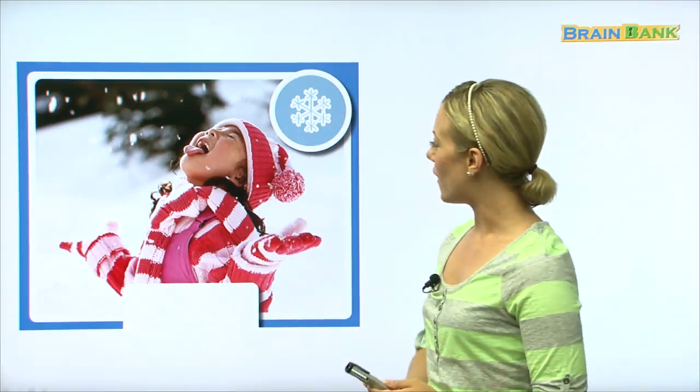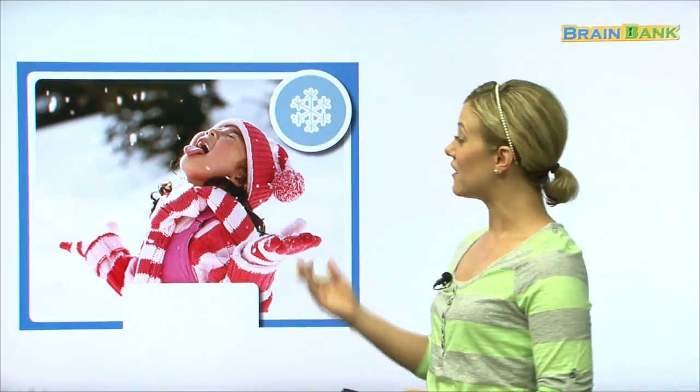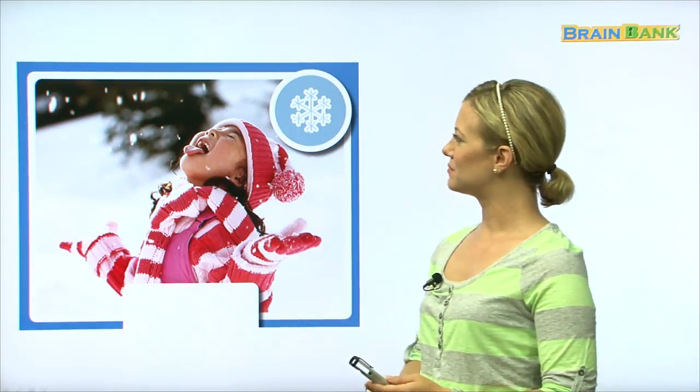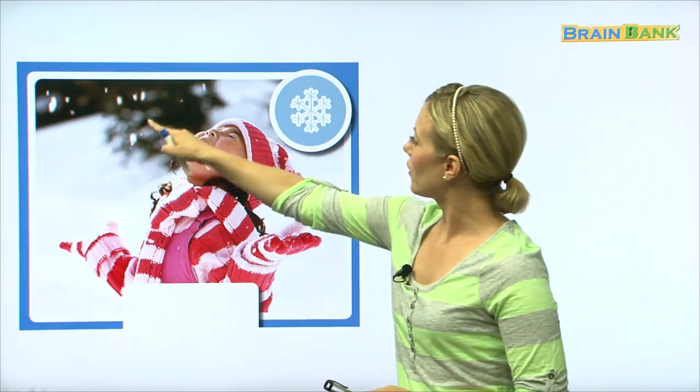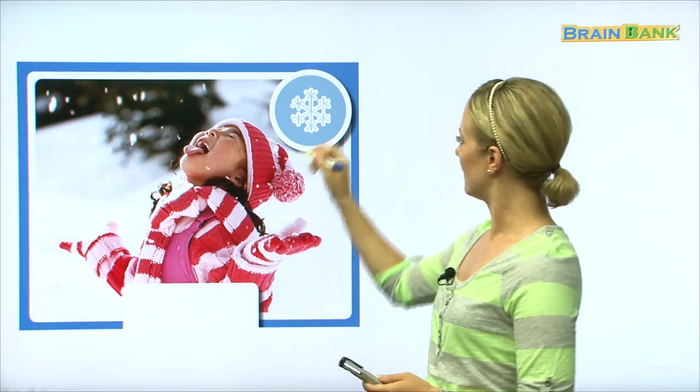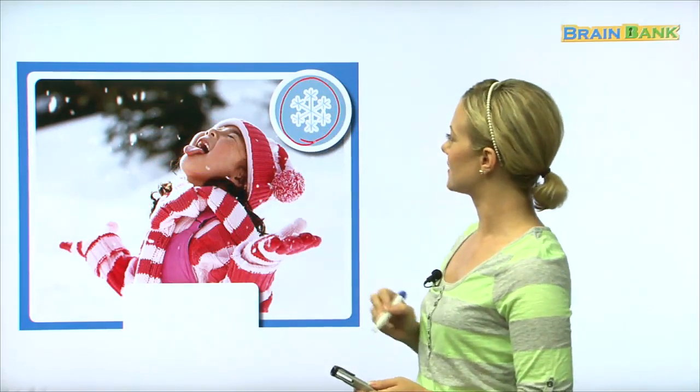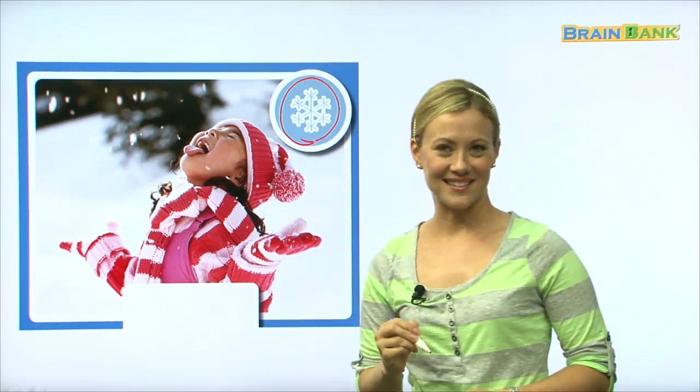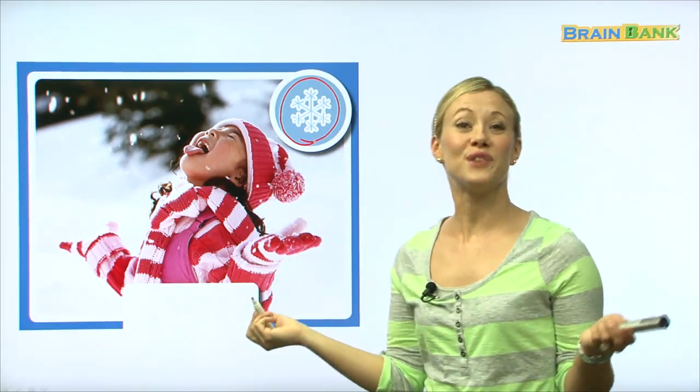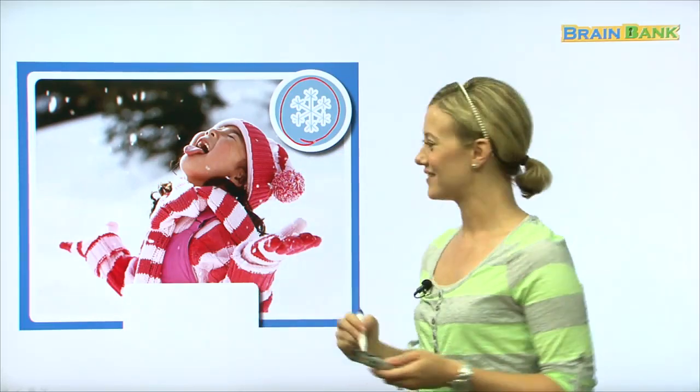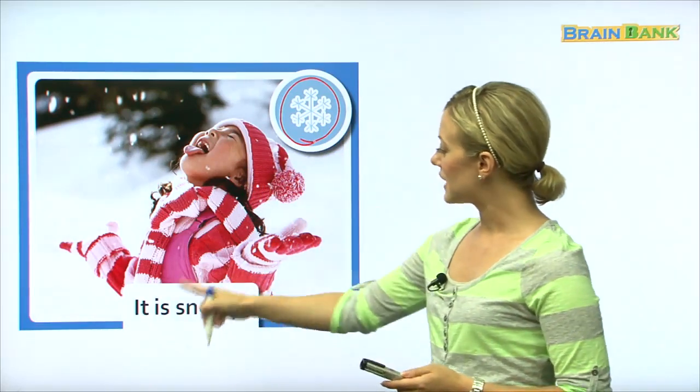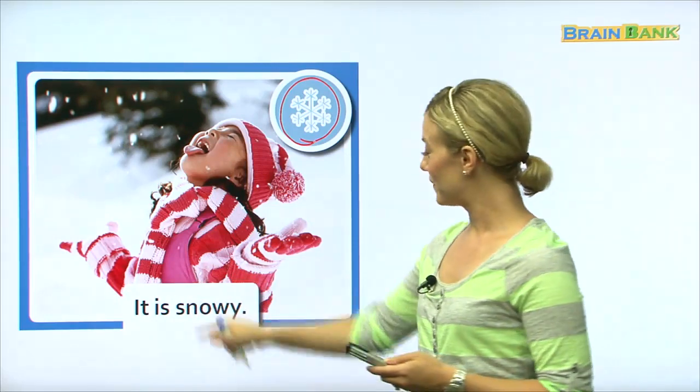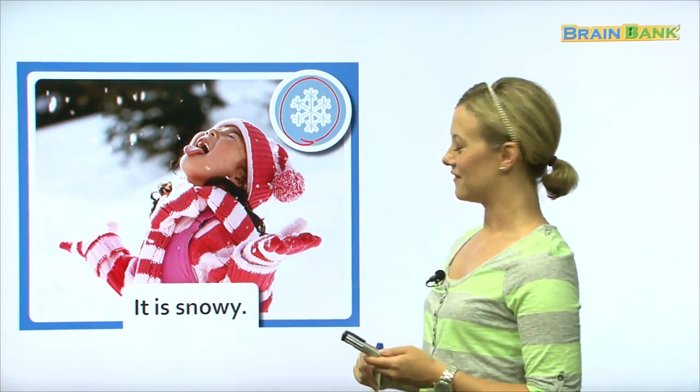Okay, so now we have another picture and another kind of weather. What kind of weather is this? Is this windy? No. What is falling from the sky? What are these? Yes, I heard someone say snow or snowflakes. So the little girl is catching the snow on her tongue. Very good. So this weather, it is snowy. Can you say it with me? It is snowy. Very good.